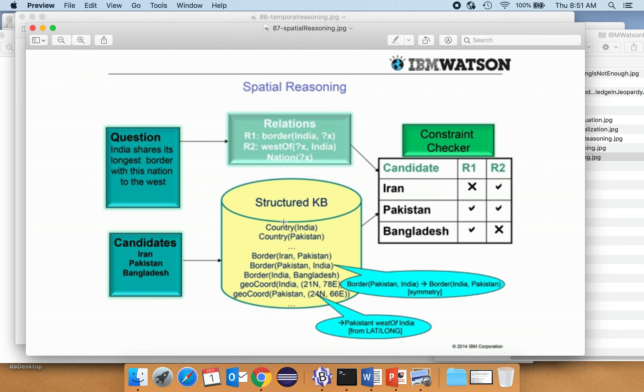Spatial reasoning, again, they have lots of information stored in structured knowledge bases. The clue is India shares its longest border with this nation to the West. And so we have some candidates, Iran, Pakistan, Bangladesh, that came up as part of searching. And so now we want to find out that there are countries called India and Pakistan. Pakistan has a border with Iran. Pakistan has a border with India. India has a border with Bangladesh. And so we have geo coordinates. And then we can use these things to determine whether something is to the West or to the East. And so, I think the answer actually is Iran, but I'm not a hundred percent sure.